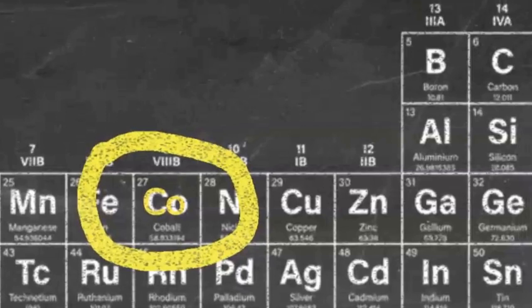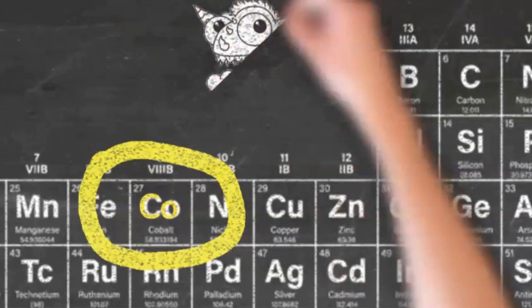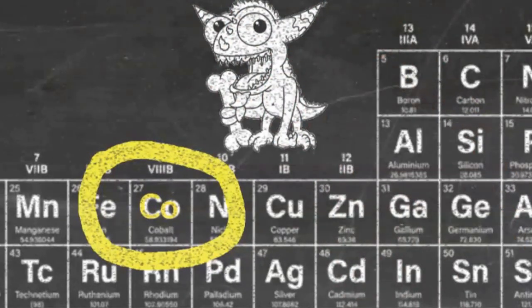While you might need to know who discovered an element, in this case the Swedish scientist George Brandt, you will certainly need to know the origin of the element's name. In this case, the name cobalt is derived from the German word for goblin.